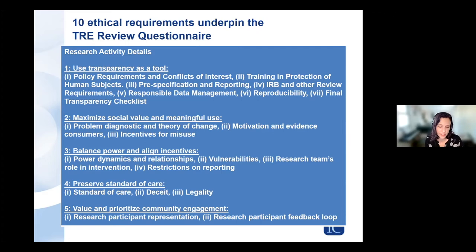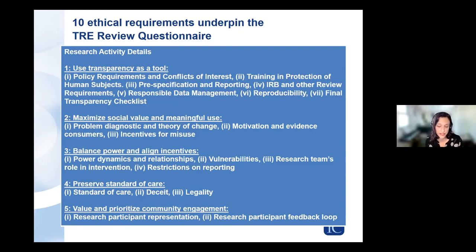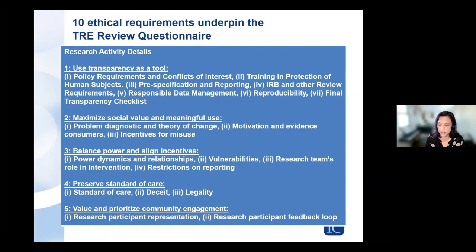The fourth requirement is to assess the extent to which the intervention studied will preserve or improve the de facto standard of care, to consider if the intervention or study requires deceit, and to provide an assessment and explanation on the legality of the intervention and the study methods used. The fifth requirement is to value and prioritize how the study team engages with the community. This includes ensuring research participant representation at study design, implementation, and dissemination, with special emphasis on a research participant feedback loop to ensure participants receive information regarding the evidence generated as a result of their valuable input.